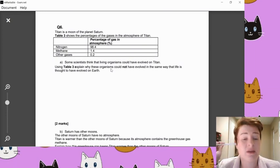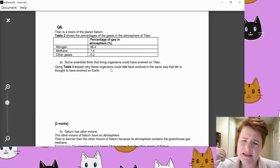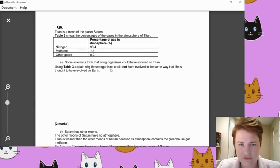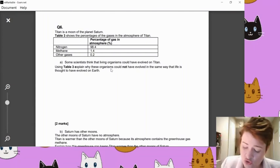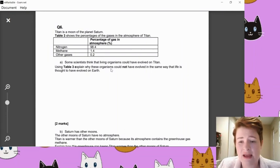So percentage of gas in the atmosphere, it's got nitrogen at 98.4. That's a fair bit of nitrogen. Not that nitrogen particularly does anything. Most of our atmosphere at the minute is about 80% nitrogen, and it's what we call quite inert. It doesn't really do an awful lot. So having that much nitrogen doesn't really matter in the nicest possible way. Methane, 1.4. Now, methane we do know is a greenhouse gas, so that's not going to be great for the warmth of the planet. Well, no, it will be. It'll be too good for the warmth of the planet, assuming it has an ozone layer to keep the heat in. And 0.2 of other gases.